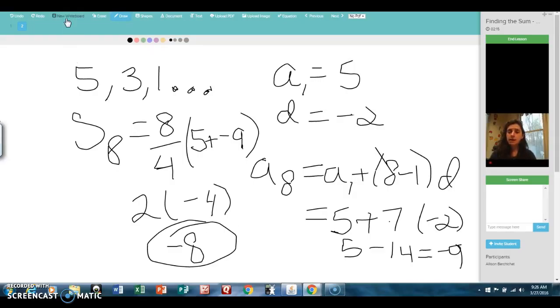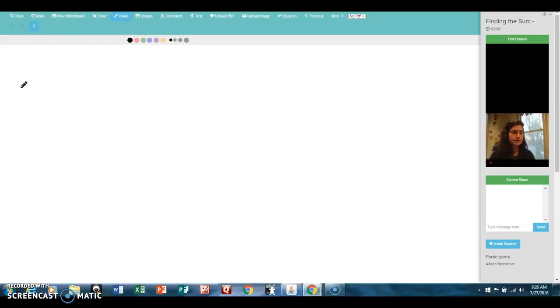Alright, now let's take a look at what we need to do for geometric. First, let's start with some formulas. The nth term is the first term times r to the n minus 1 power.